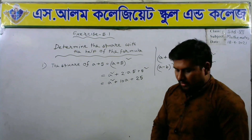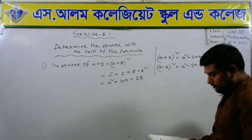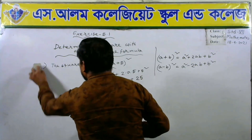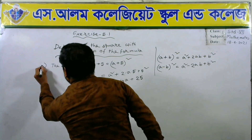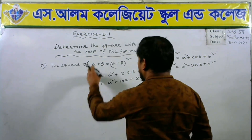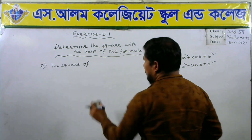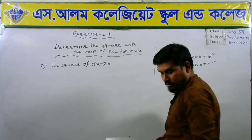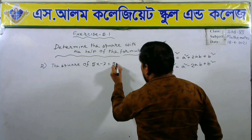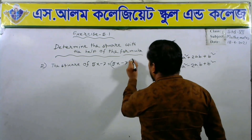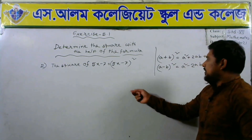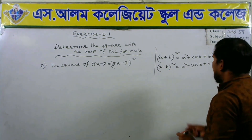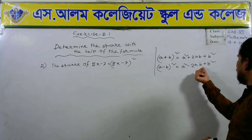We can solve another one with the help of the formula. Number 2: the square of 5x minus 7. The square of 5x minus 7 equals — we can write 5x minus 7 whole square. It is similar to a minus b whole square. So we can arrange that: a square minus 2ab plus b square.